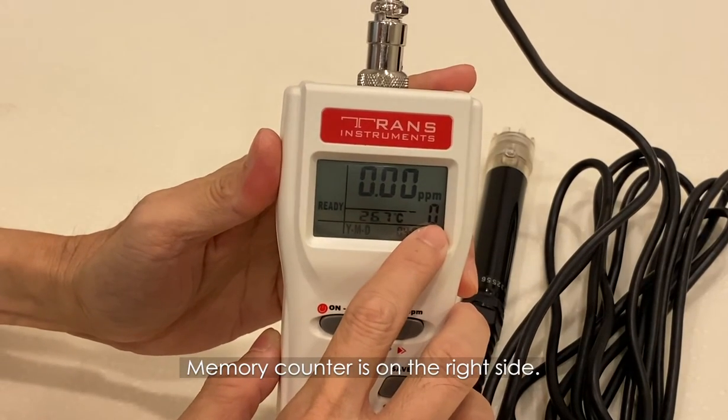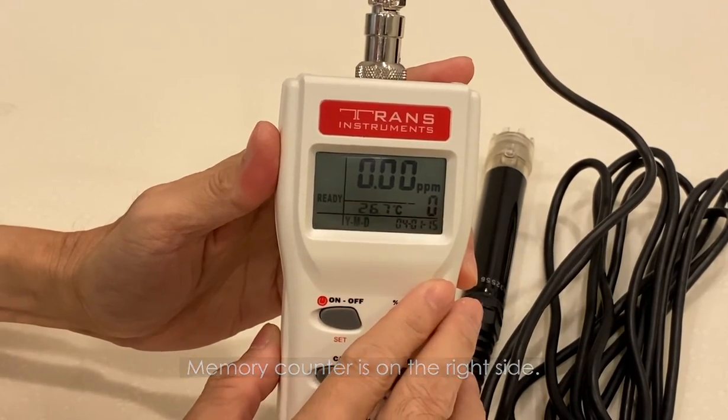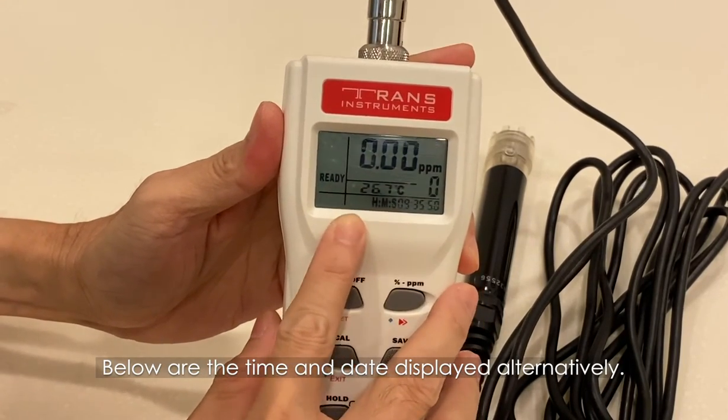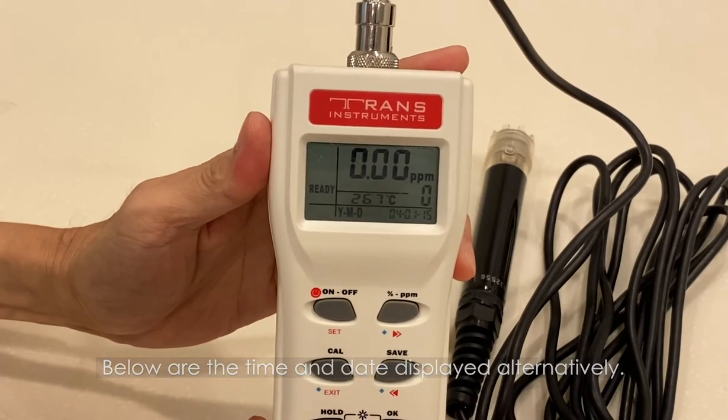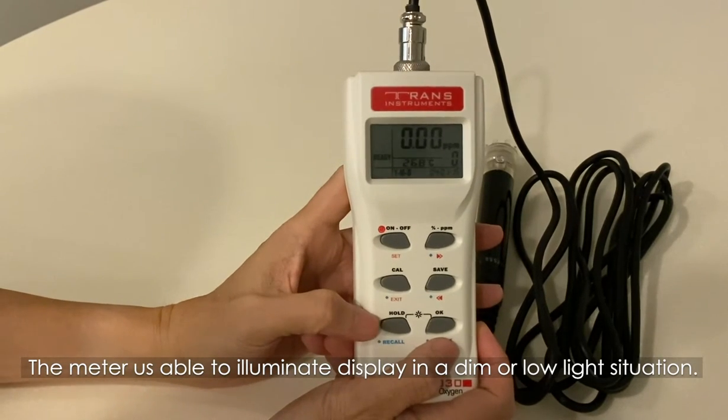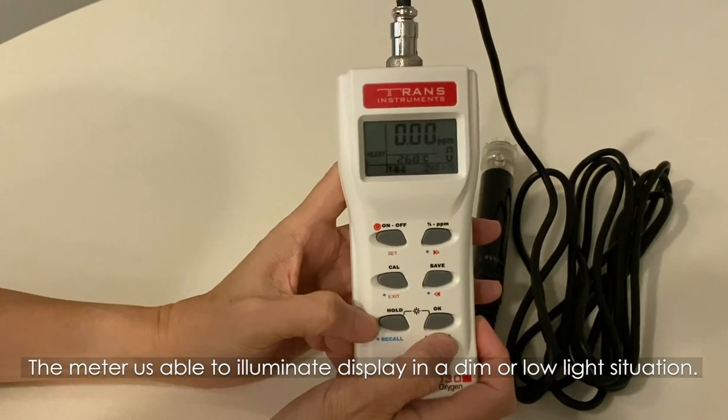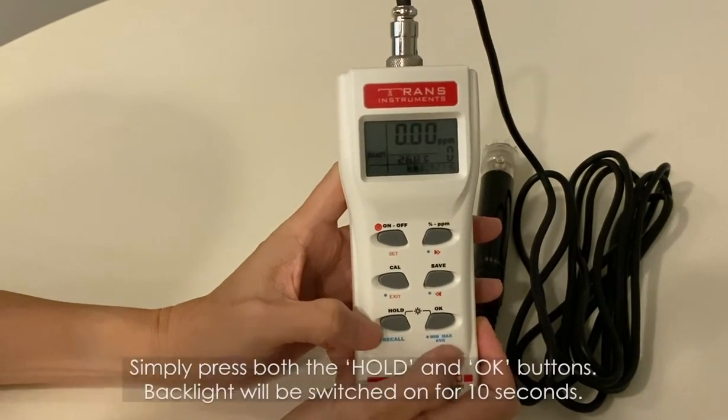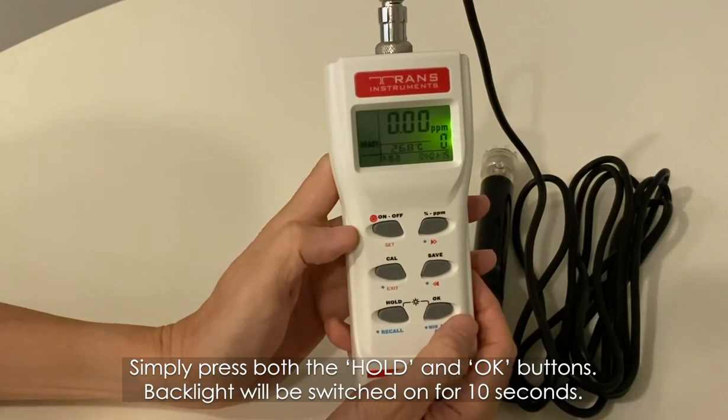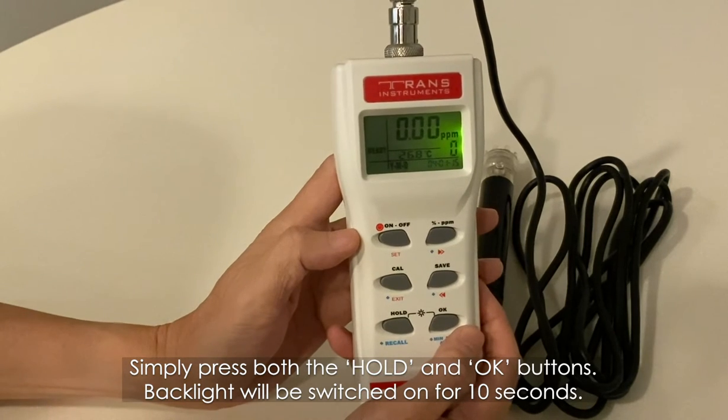The memory counter is on the right side. Below are the time or date displayed alternatively. The meter is able to illuminate display in dim or low light situation. Simply press both the hold and OK button and backlight will be switched on for 10 seconds.